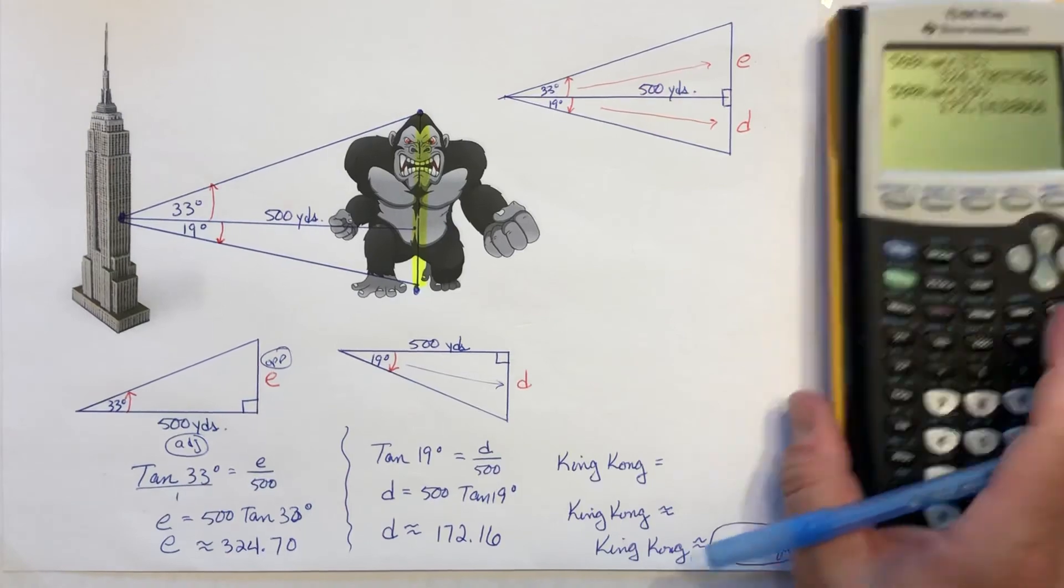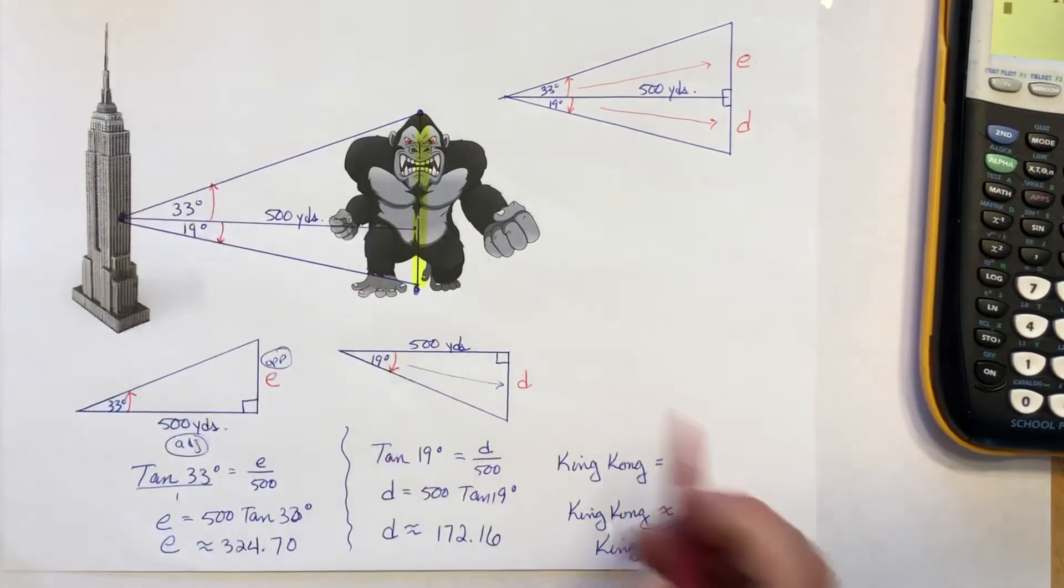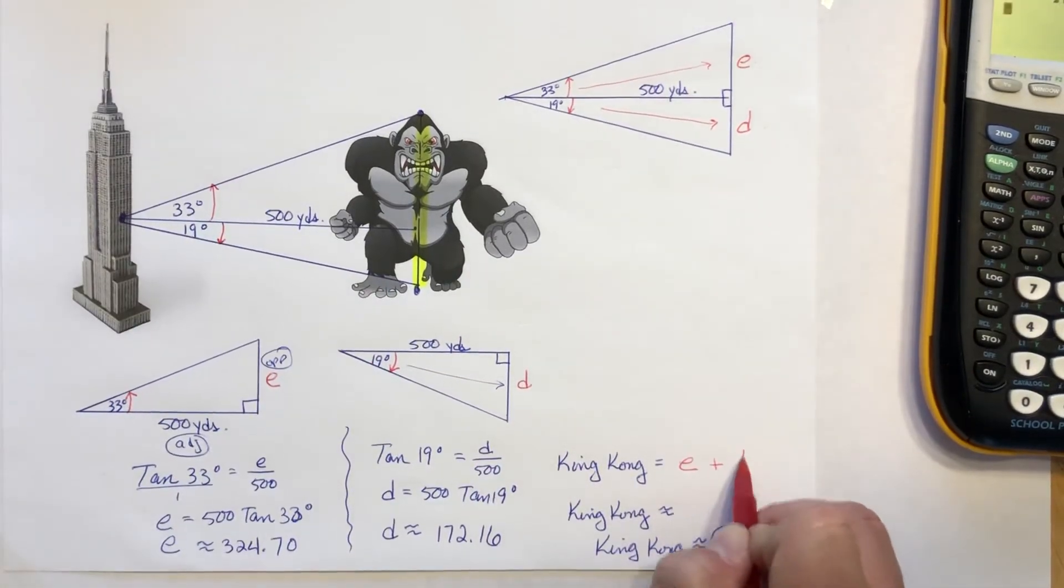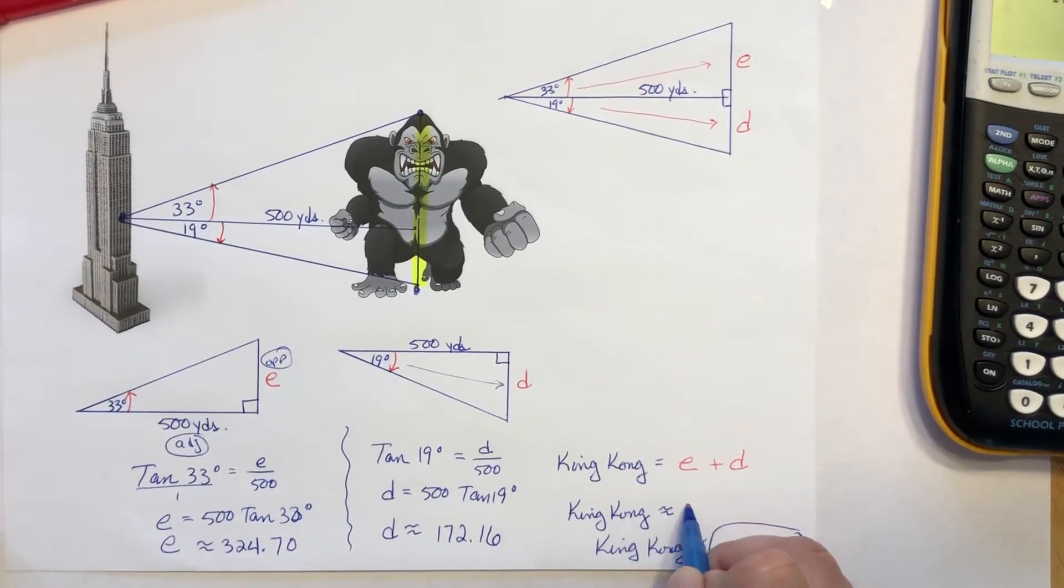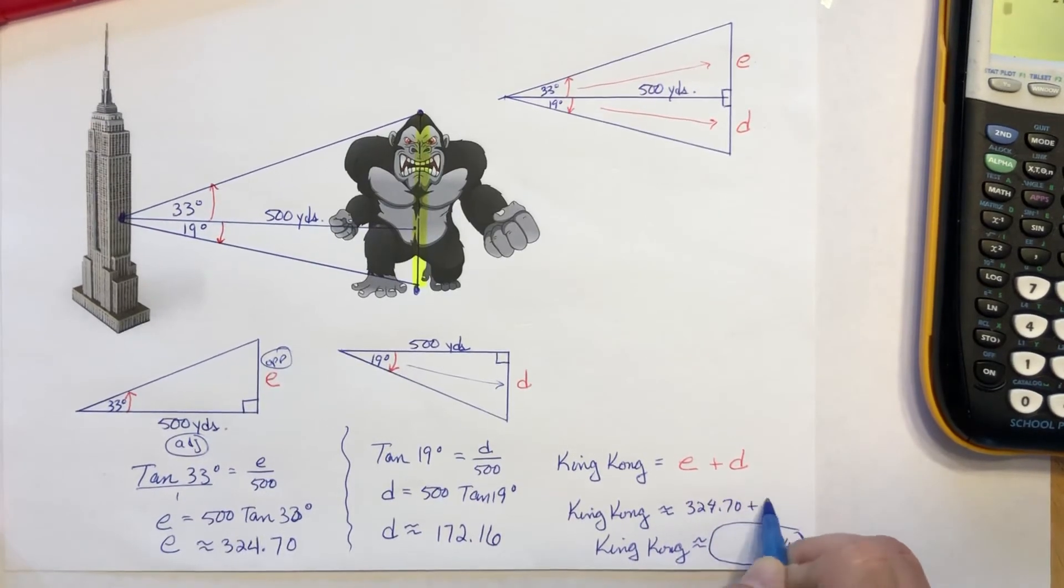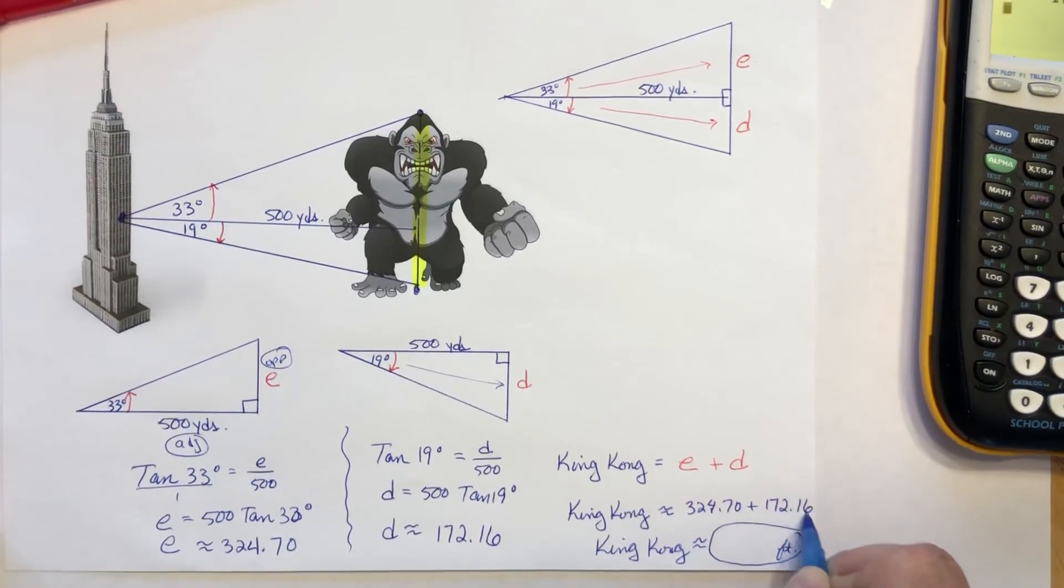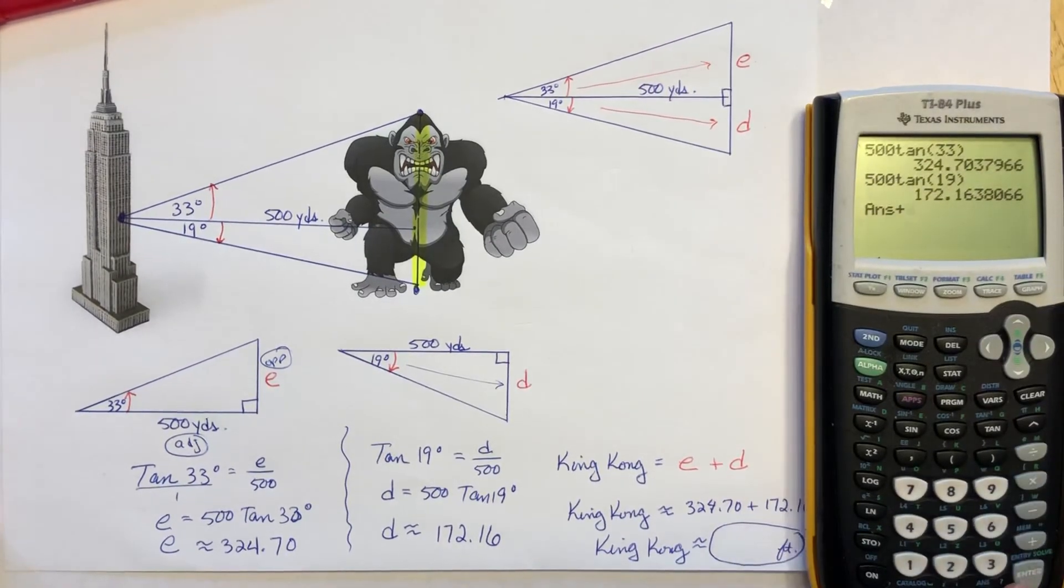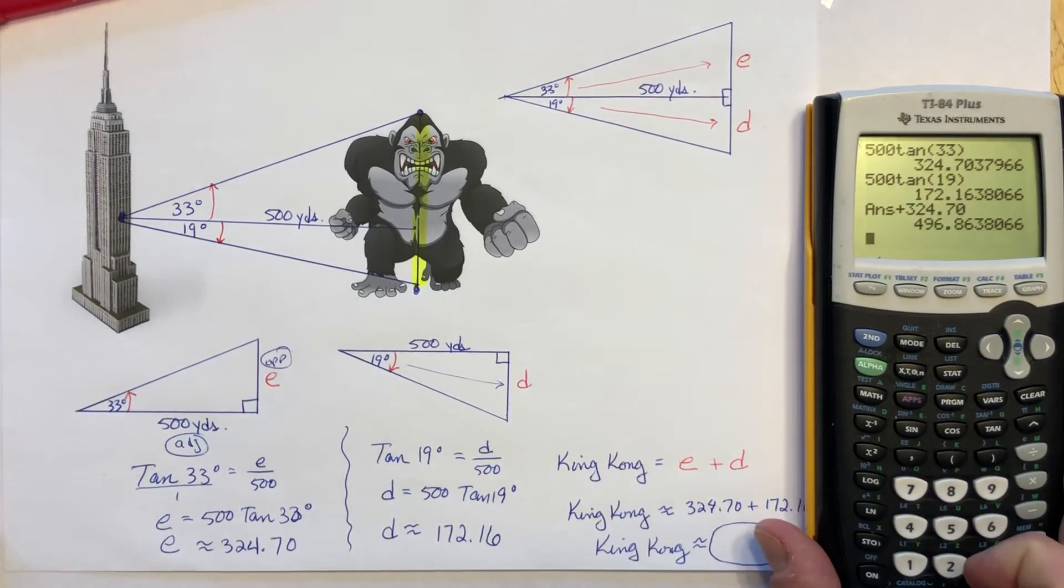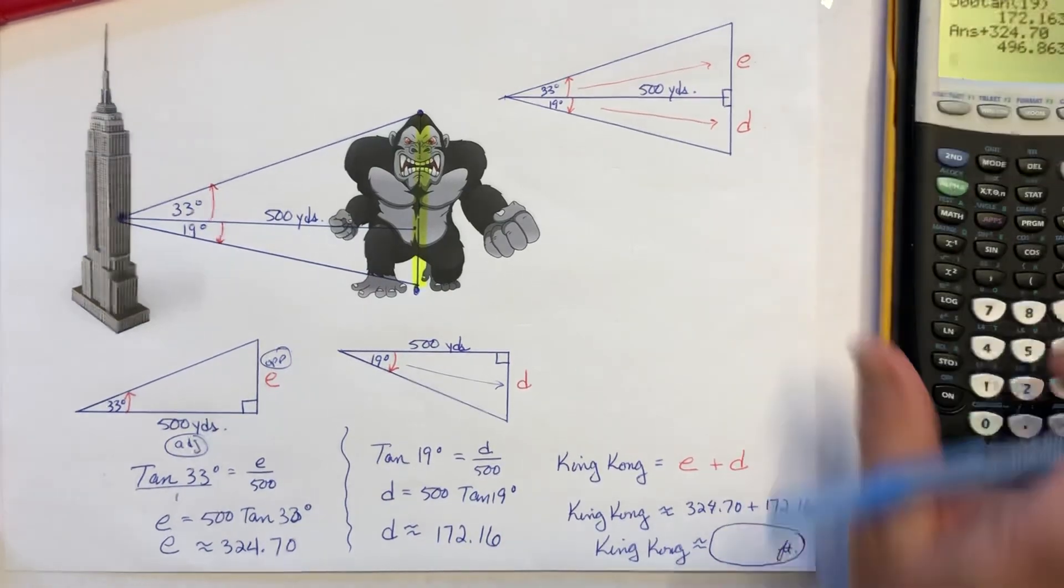So now what I'm gonna do is, King Kong is going to be the lengths of E plus D. So for me, I ended up getting 324.70 plus 172.16. So now I'm just gonna type that in my calculator real quick. And that gives me a total of 496.86.